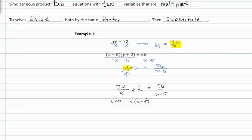I'm going to now multiply my LCD through to each term in my equation and divide out the common factors. When I rewrite this, I get seventy-two times x minus five plus two times x times x minus five equals x times fifty-six.